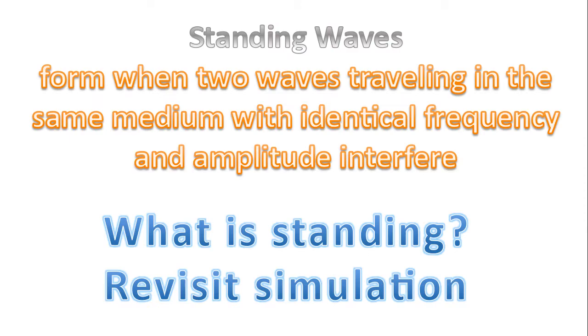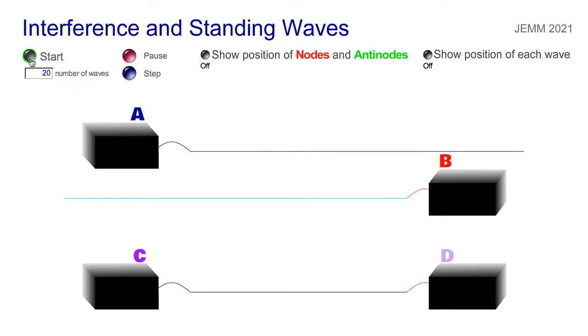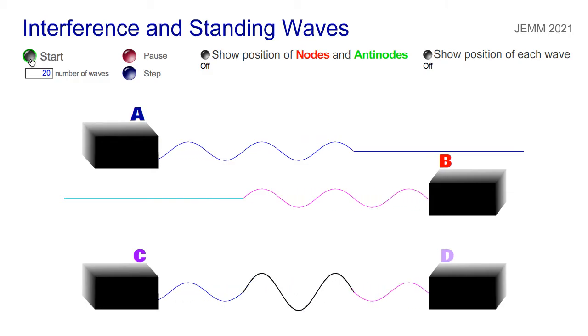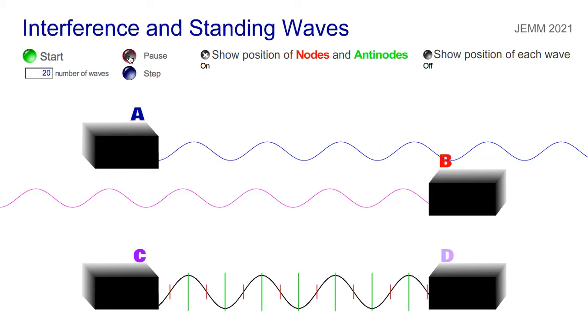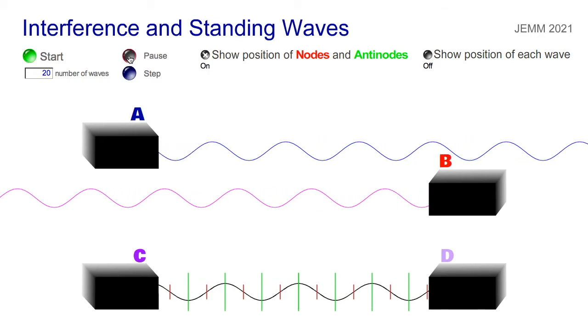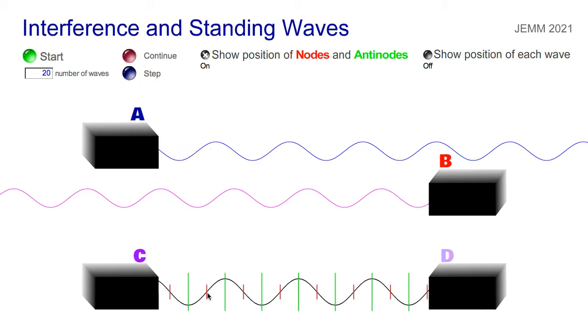So you may be wondering, why is it called a standing wave? What exactly is standing about the wave that you just saw? Let's see the simulation again to see what's standing. So you're going to notice that certain points in the medium, in the string, never move. Please take a look at these positions here. These positions, no matter how long you look at the wave for, will never move. So these parts of the medium that never move, we have a special name for them. They're called nodes.